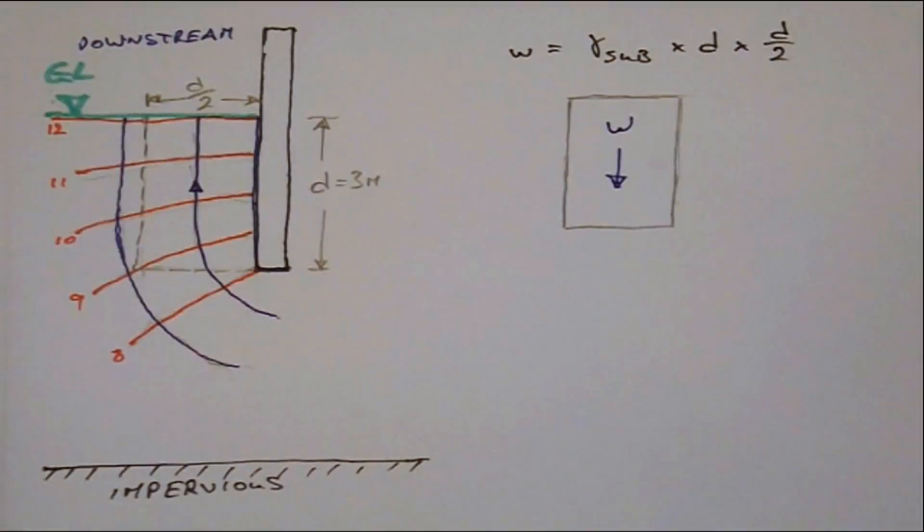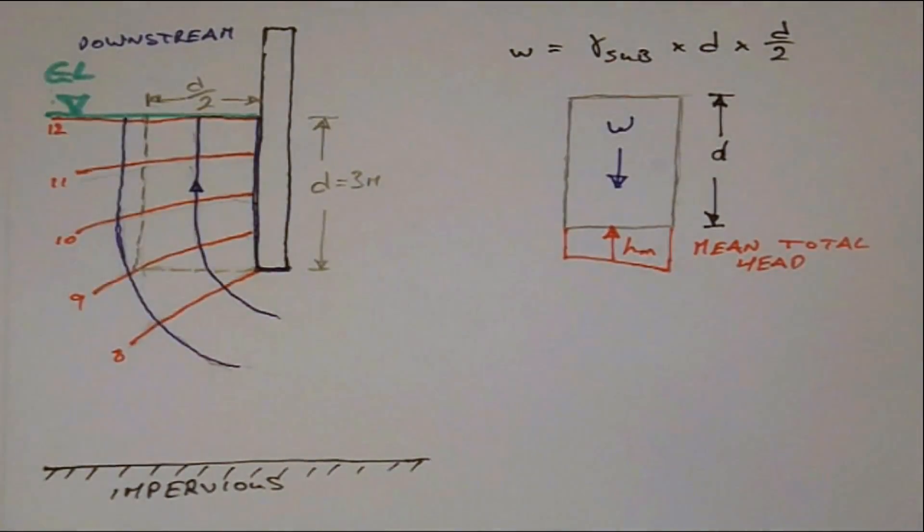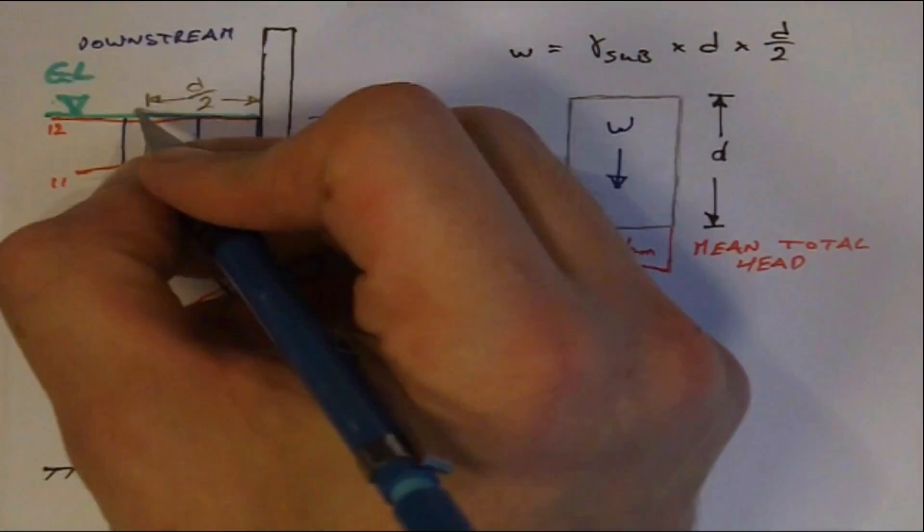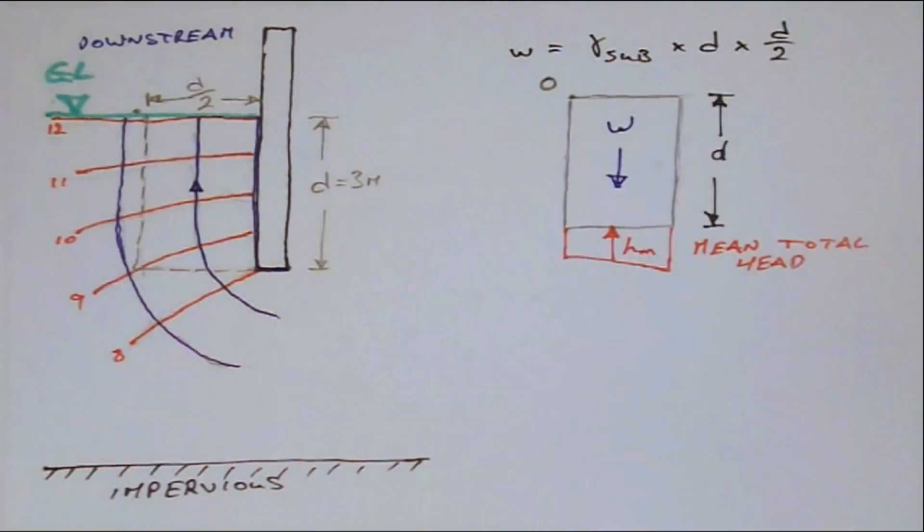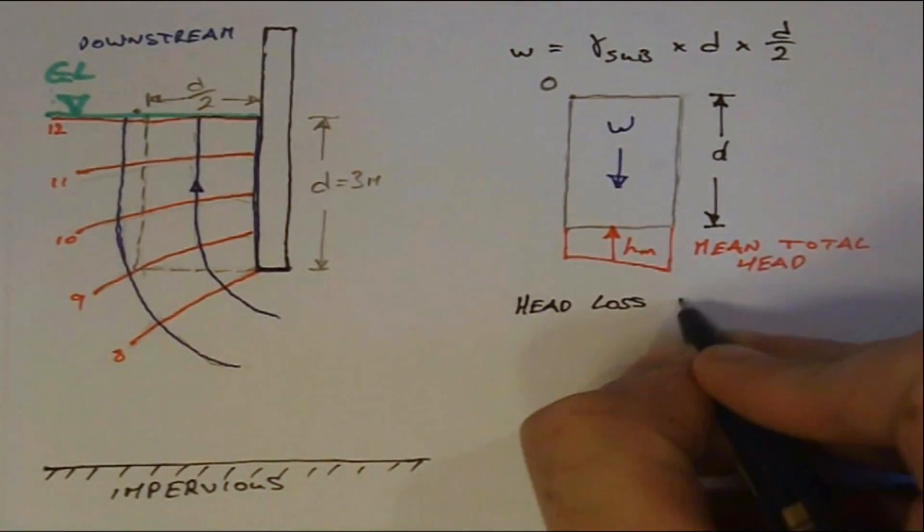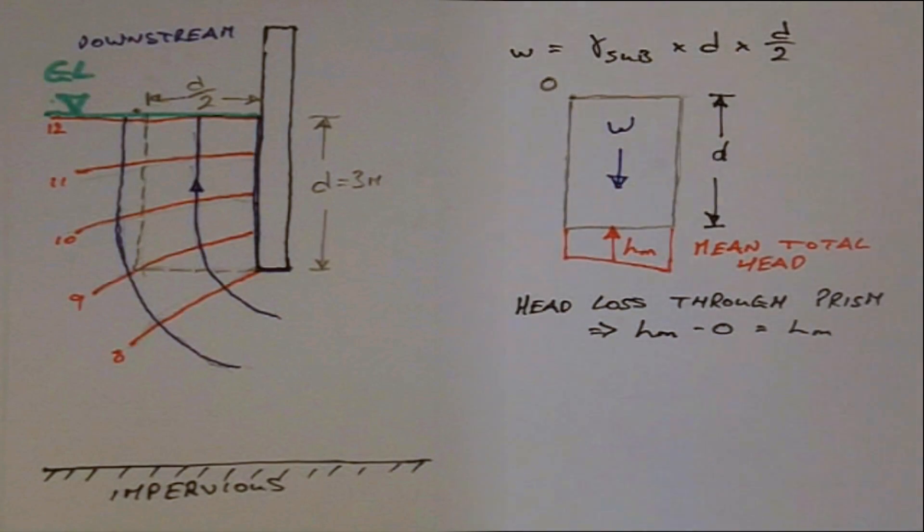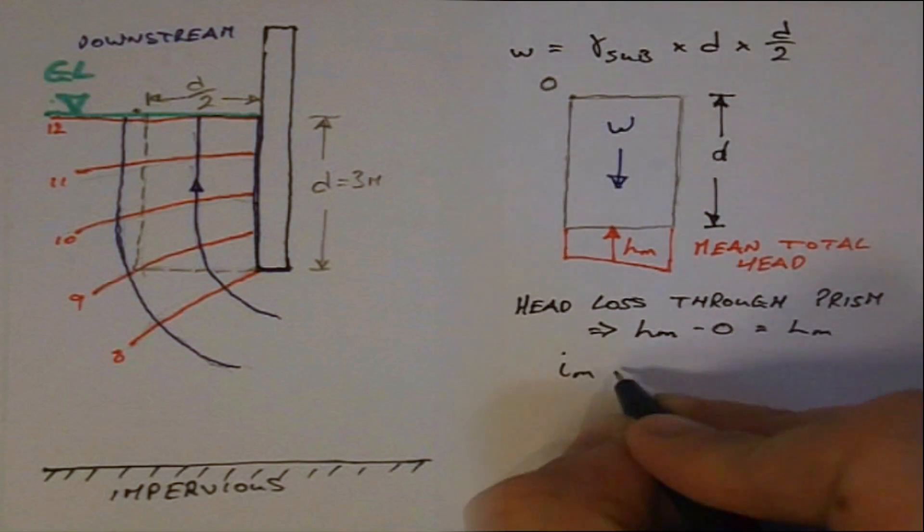Considering the seepage force on the prism, we first calculate the mean total head acting on the base from the flow net. We note that the total head at the top of the prism is 0, therefore the mean head loss through the prism is equal to H mean minus 0, or simply H mean.